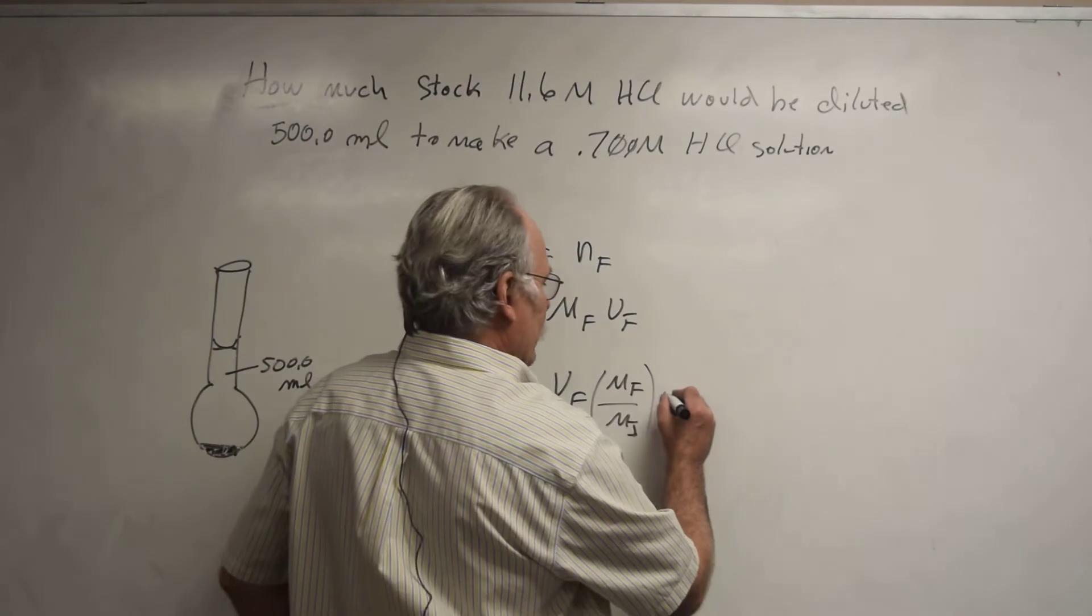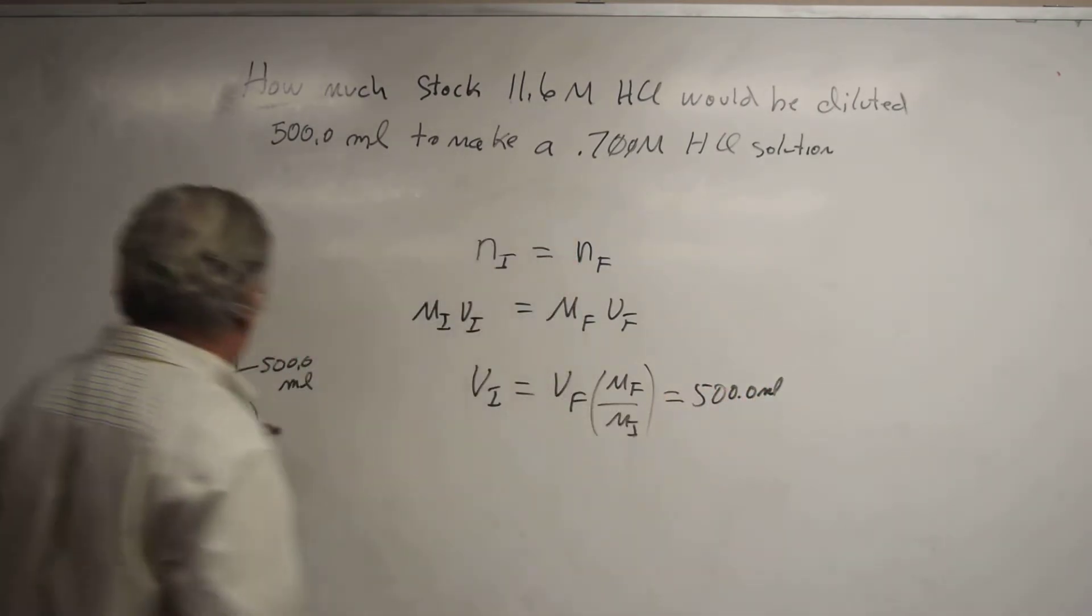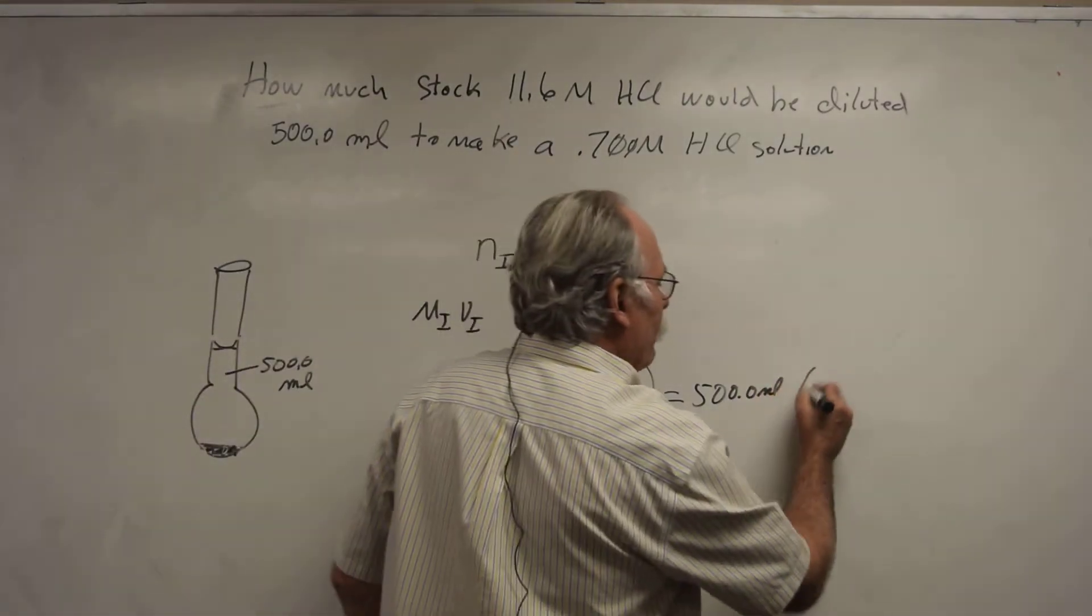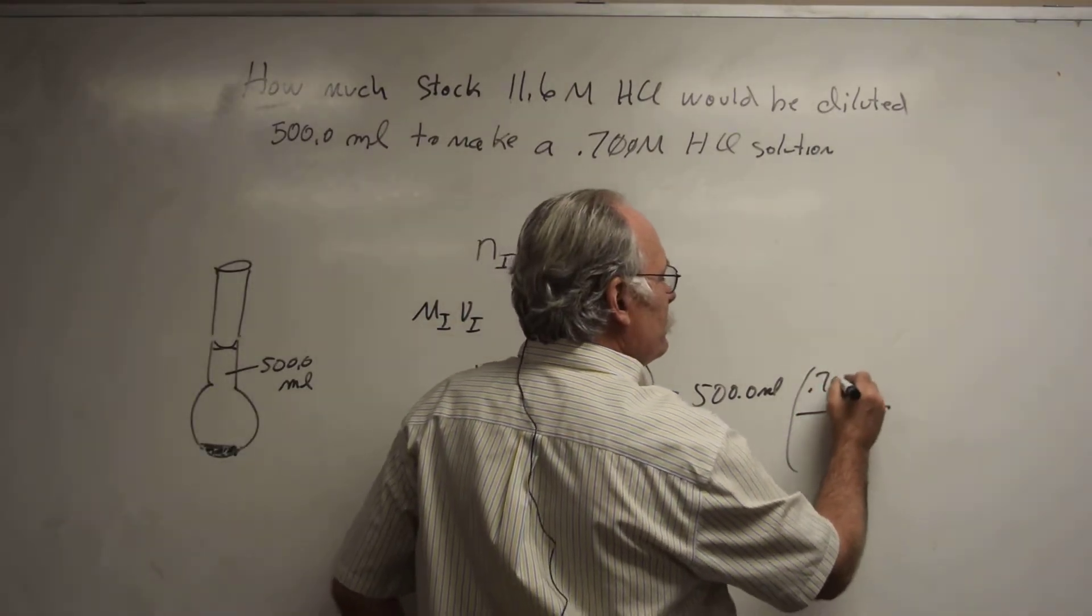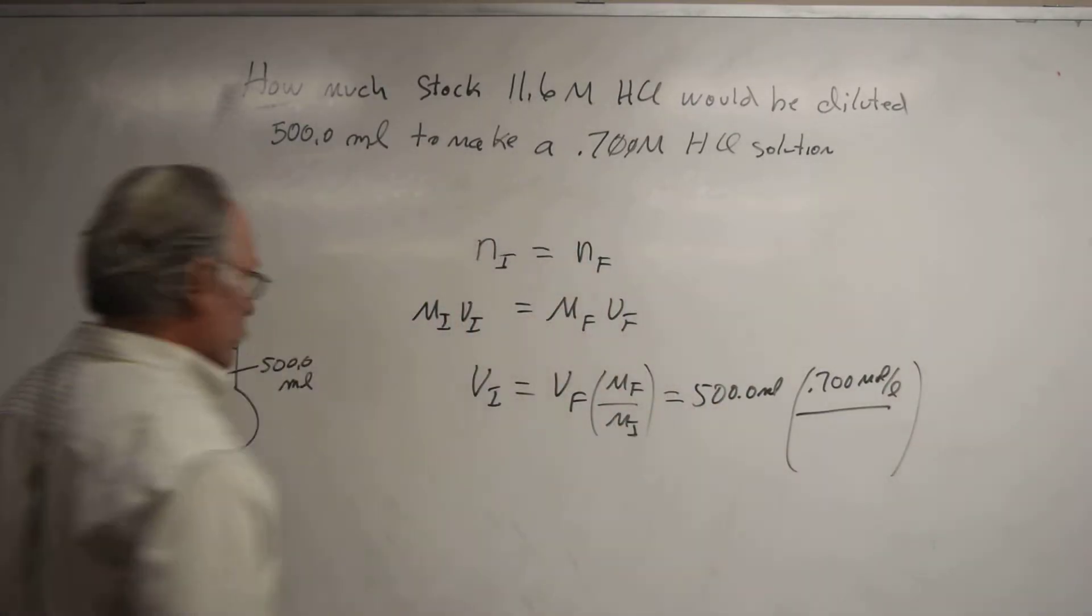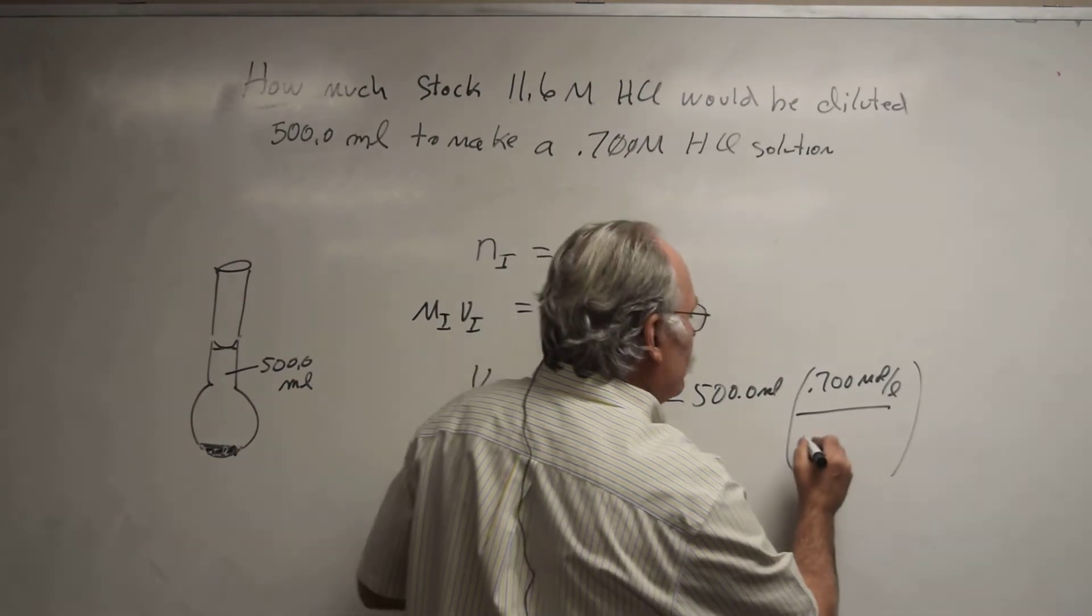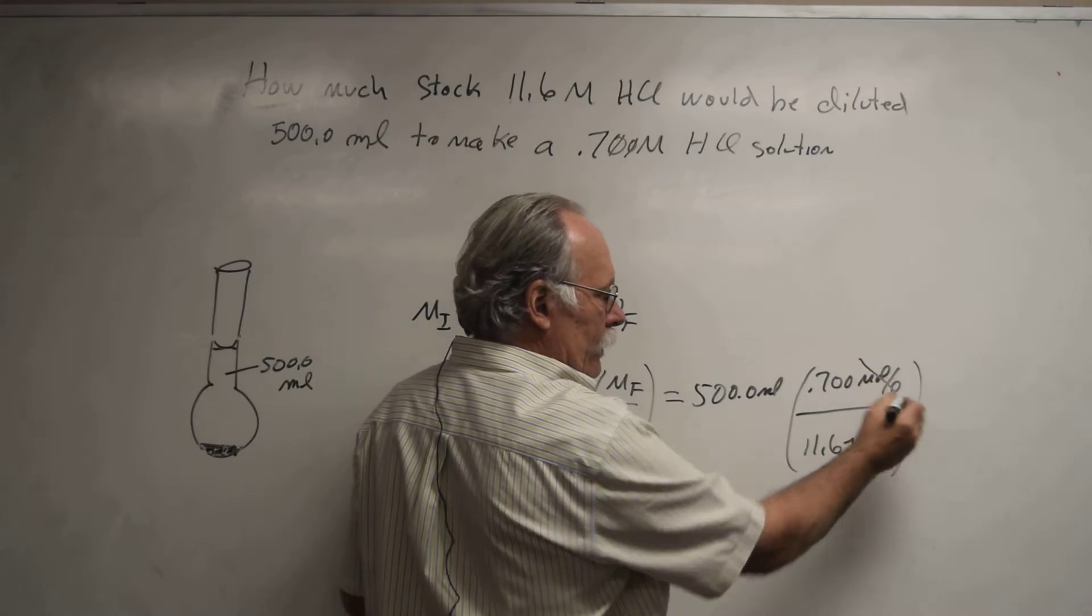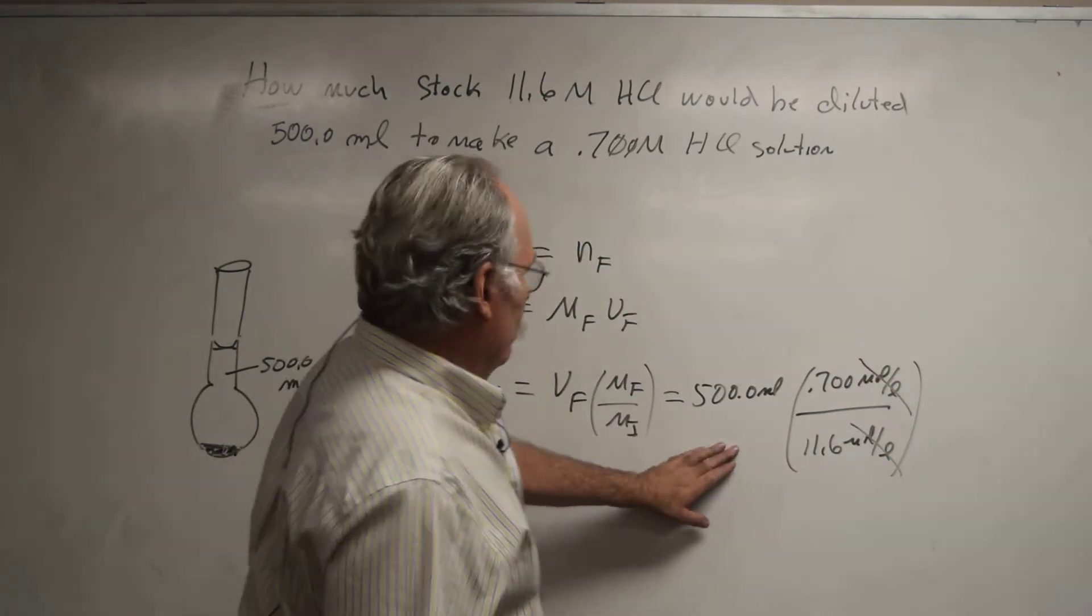So now this would be equal to, I want 500.0 mL. That's the final volume after I've diluted it. And I want it to have a final concentration of 0.700 moles per liter when I added a solution that had an initial concentration of 11.6 moles per liter. And notice how the moles per liter cancel, and I'm able to directly go to this.